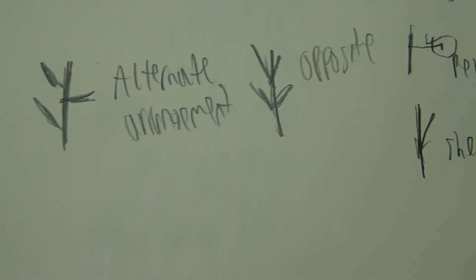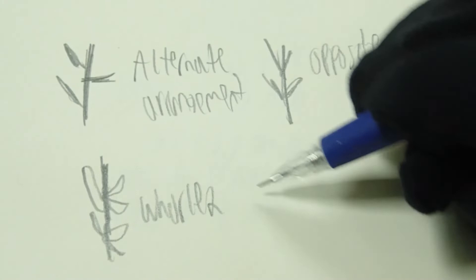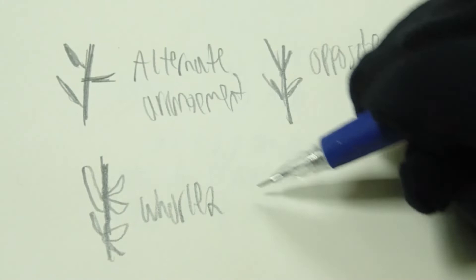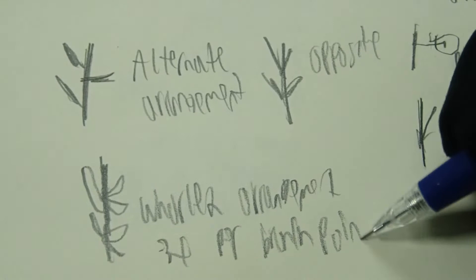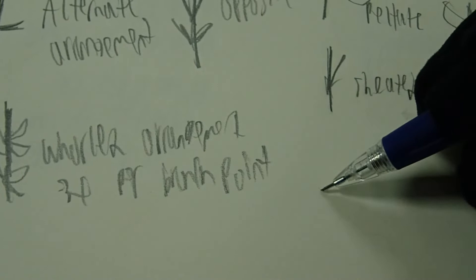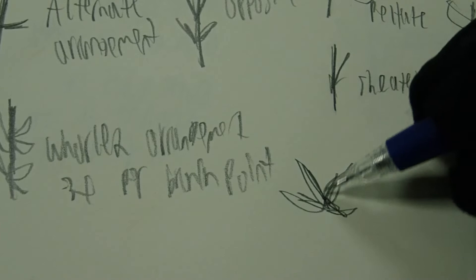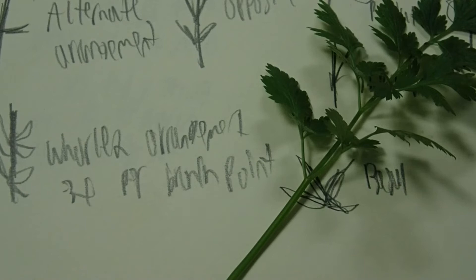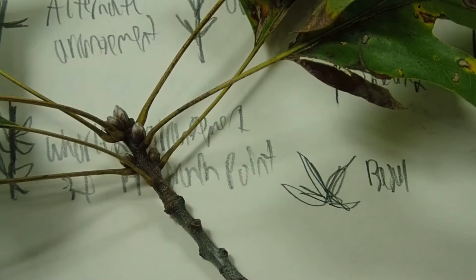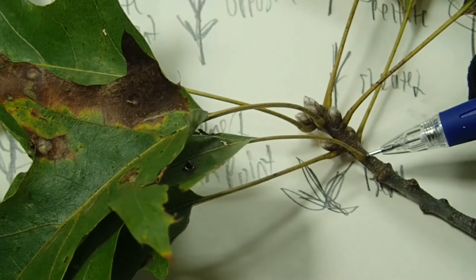There are two more arrangements you tend to see: the whorled arrangement, where more than three leaves emerge per branch point, and basal leaves, where all the leaves come out of the base of the plant and are not along the stem. This carrot would be a good example of basal leaves, whereas this oak branch here is a good example of alternate, although they are fairly clustered, so this can be a little bit subjective.